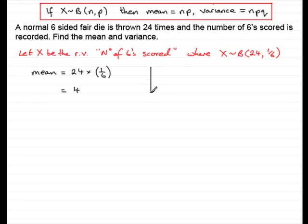As for the variance, well, we know the variance is going to be equal to n times p times q. So n is 24, p is 1 sixth, and q will be 5 sixths, 1 minus 1 sixth. Work this out and you have got 10 thirds. Very easy question there.